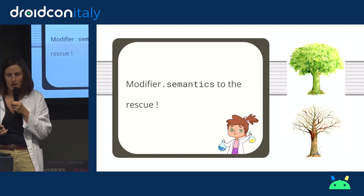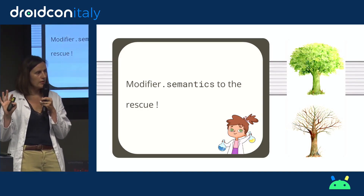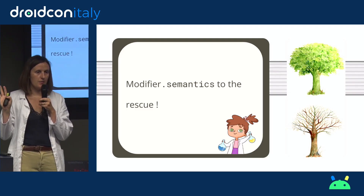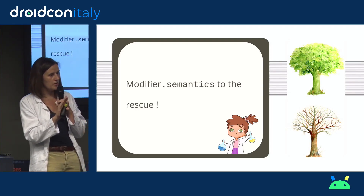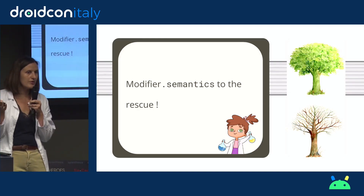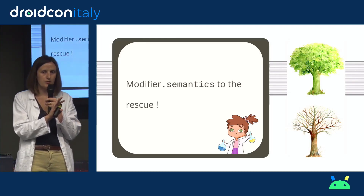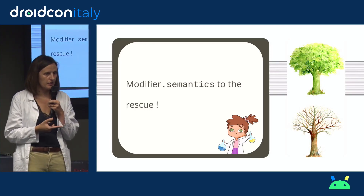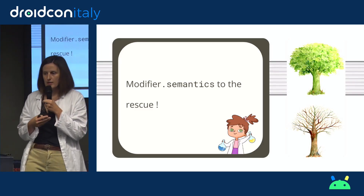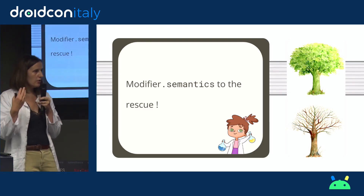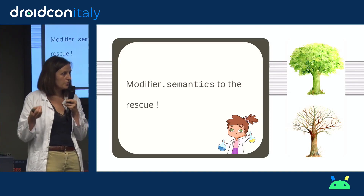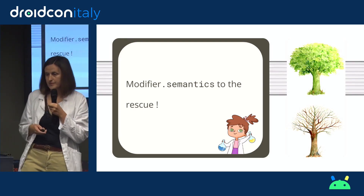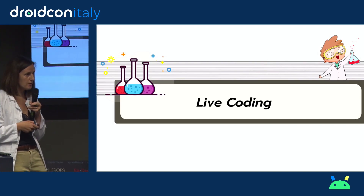What is the semantic tree? In Compose you have the composition tree that describes the hierarchy of your composables. In parallel, you have another tree called the semantic tree, which contains information like the kind of composable, how you can interact with it, and the content description — but not visual information like colors. This tree in Compose is also used by the test framework.